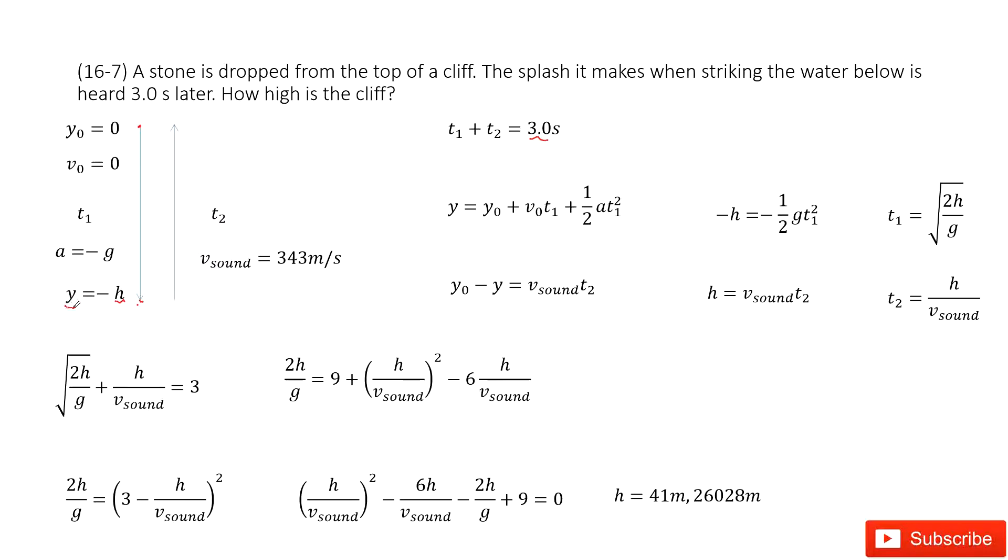We can see the final position is Y equals negative H. Initial position is zero and initial velocity is zero. Acceleration is negative g. It's just the acceleration due to gravity.